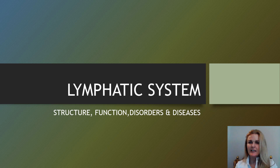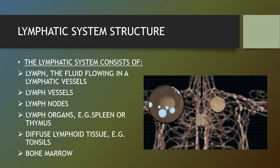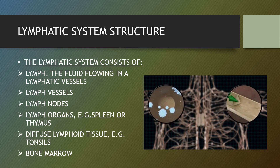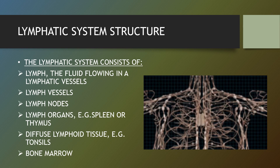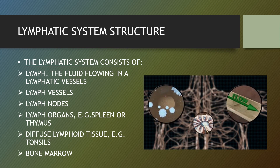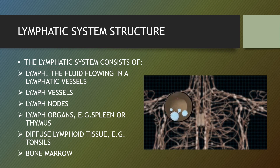My name is Selina and in this lesson you will learn the structure of the lymphatic system, the functions, disorders and diseases. The lymphatic system consists of lymph — the fluid flowing in the lymphatic vessels — lymph vessels, lymph nodes, lymph organs, diffused lymphoid tissue and bone marrow. Let's go through each of these.